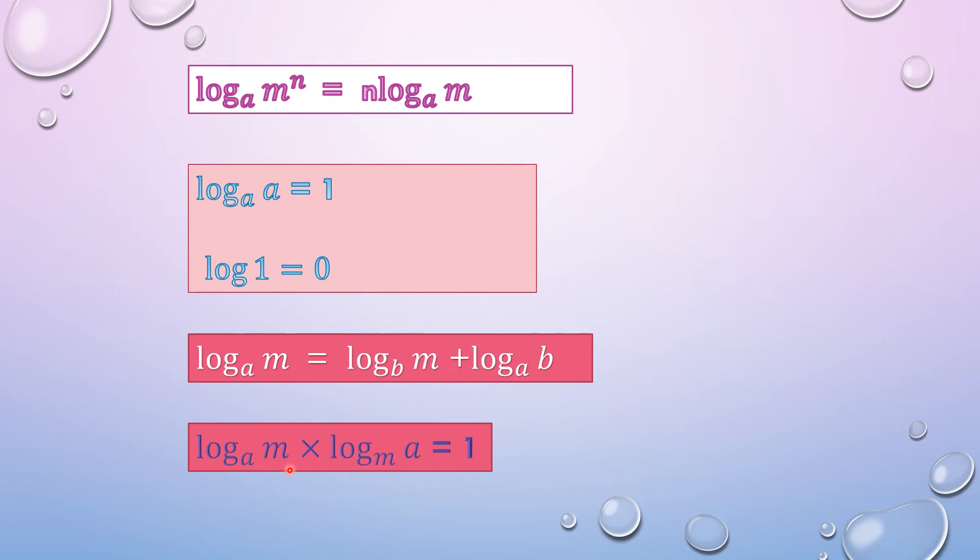Next is log of m to the base a multiplied by log of a to the base m is equal to 1. If we interchange a and m in the log on the left-hand side, answer is going to be 1.